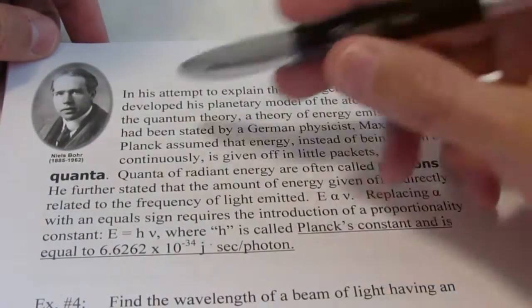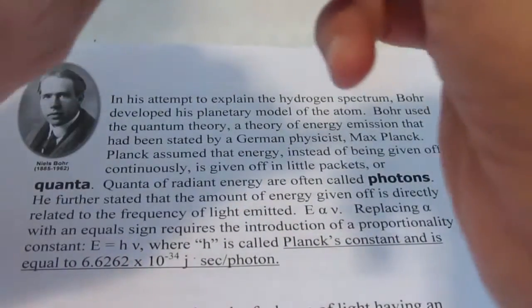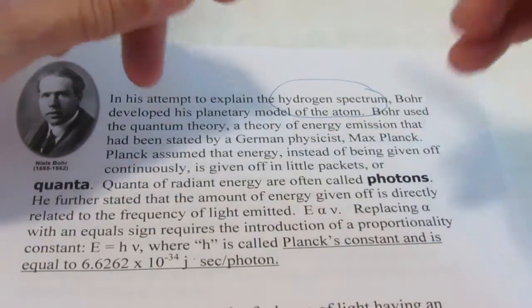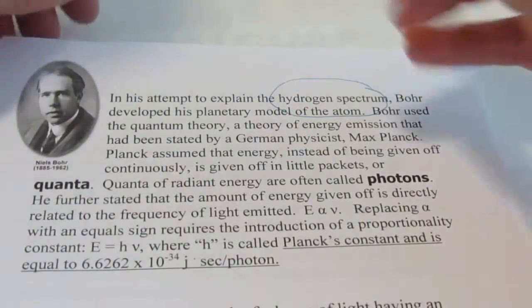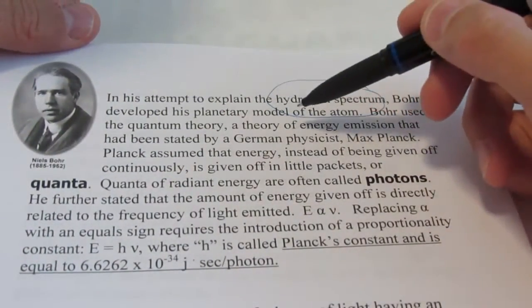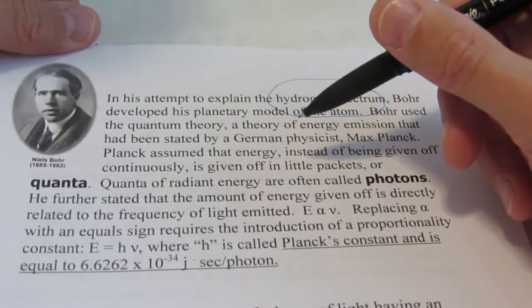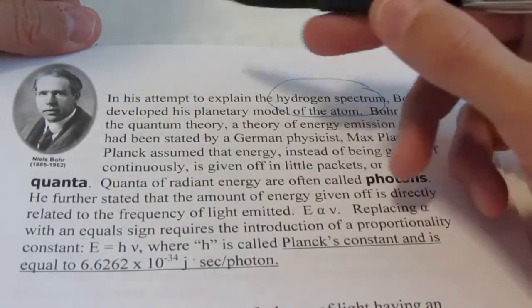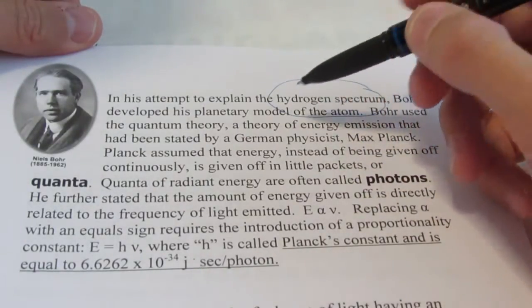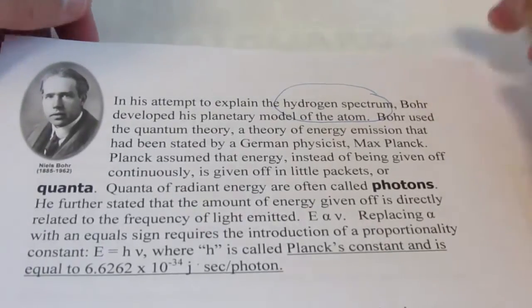Now we're going to talk today about a guy named Niels Bohr in his attempt to explain the hydrogen spectrum. We're going to come back to this and I'm going to show you guys some pictures and refer you to a video that I've created with regards to this spectrum to clear this up a bit. But in regards to that, Bohr developed his planetary model of the atom. Remember Rutherford had a planetary model of the atom where we had the nucleus and the electrons buzzing around sort of like the planets orbit the sun. Bohr's was a bit more advanced than that.